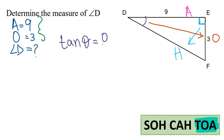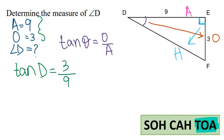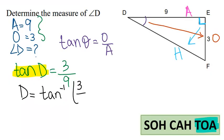Tan of theta equals opposite over adjacent. Theta here is angle d, so tan of angle d equals opposite over adjacent — opposite is 3, adjacent is 9. This is not tan times d; it is tan of d. To cancel that, I have to take the inverse, and I do the same on the other side. So d equals tan inverse of 3 over 9.